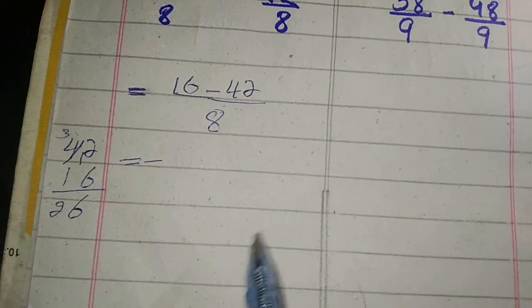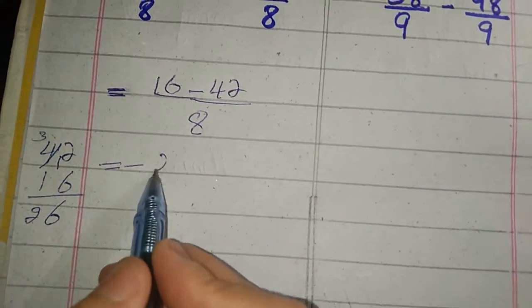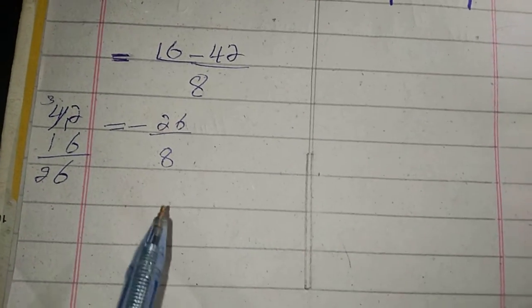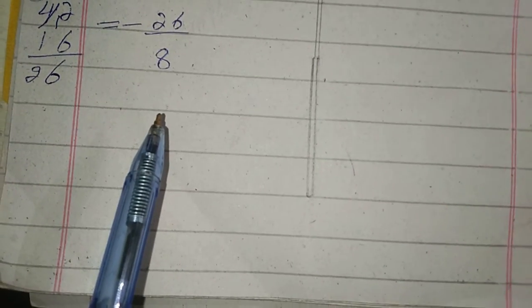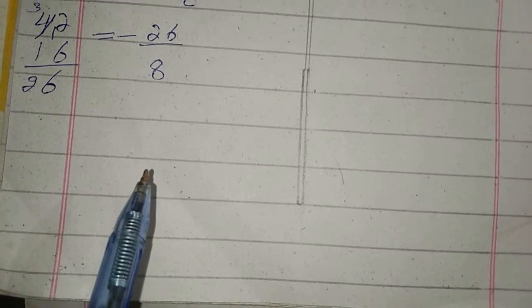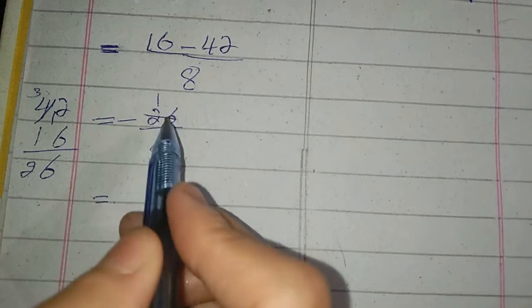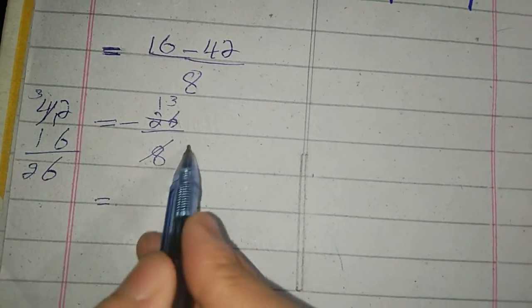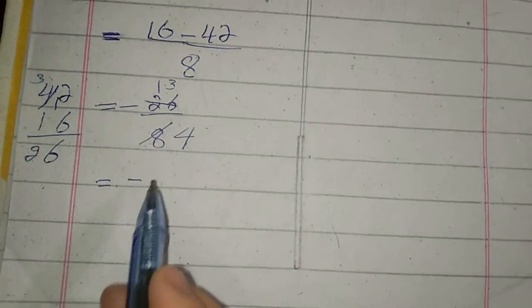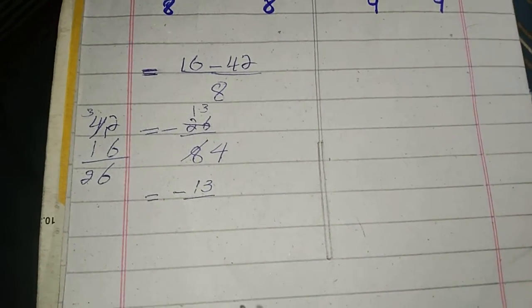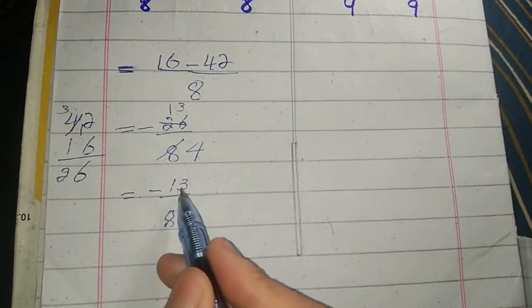So 26 by 8. If it can be divisible in the same table, then we will divide it. Now it is divisible by 2. 2 times 1 is 2, 2 times 3, and 2 times 4. The answer is -13 by 4.